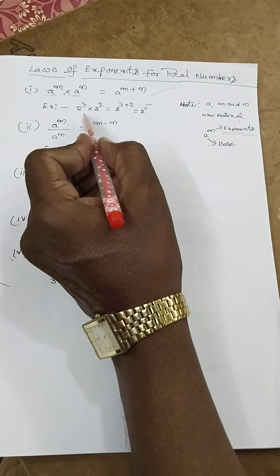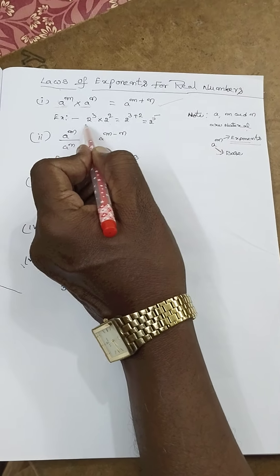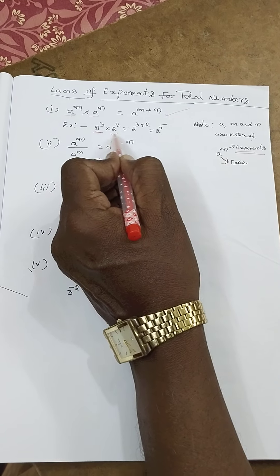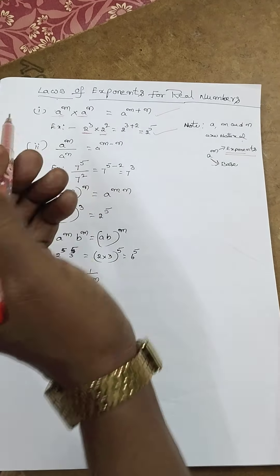For example, 2^3 × 2^2. The base is equal to 2. 2^(3+2) = 2^5.